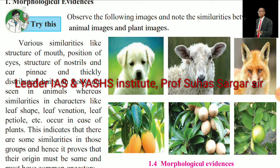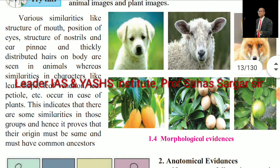Various similarities like the structure of the mouth, position of the eyes, structure of the nostril, ear pinna, and thickly distributed hairs on the body are seen in animals. Similarities in characters like leaf shape, leaf venation, and leaf petiole occur in plants. This indicates that there are some similarities in those groups, proving that their origin must be the same and they must have common ancestors.